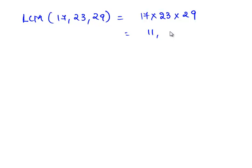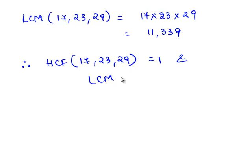Therefore HCF of 17, 23 and 29 is equal to 1 and LCM of 17, 23 and 29 is equal to 11,339.